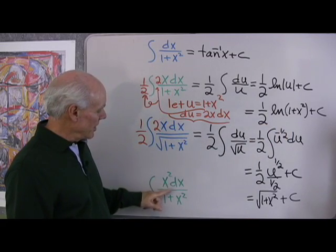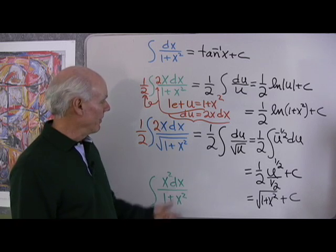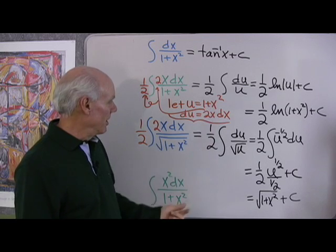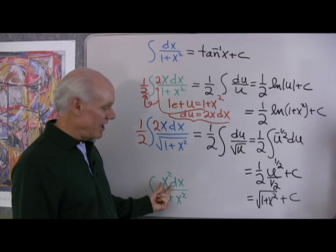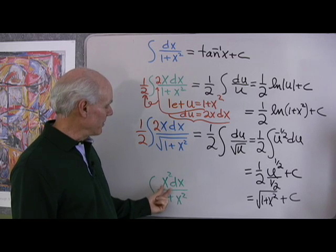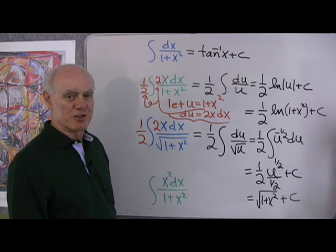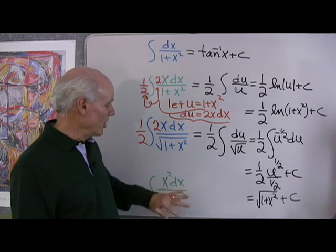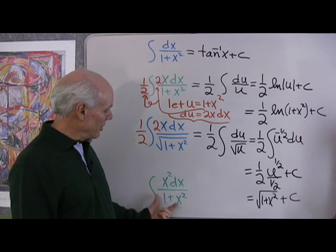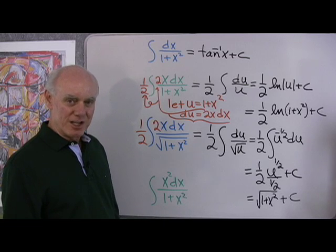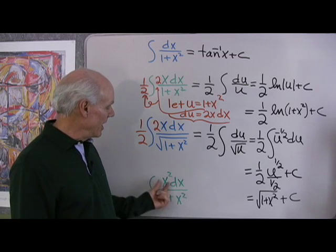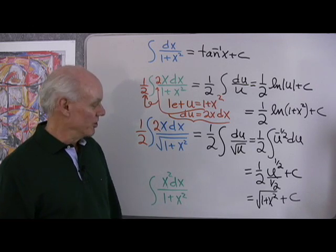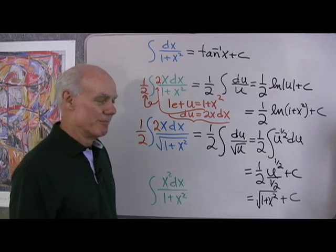Now how about this, x squared dx over 1 plus x squared. Well if I do my same substitution, 1 plus x squared, du is going to be 2x dx. I can't get that 2x dx here, I'm going to have to multiply by 2 over x to do that, to make up for that, I'm going to have to multiply by x over 2, I'm going to end up with an x there no matter what I do. But I'll tell you what, this turns out to be actually very easy to integrate if I just divide x squared by 1 plus x squared.